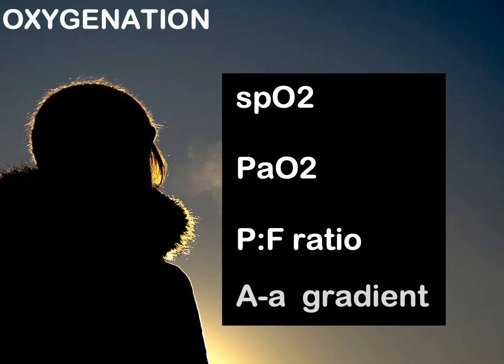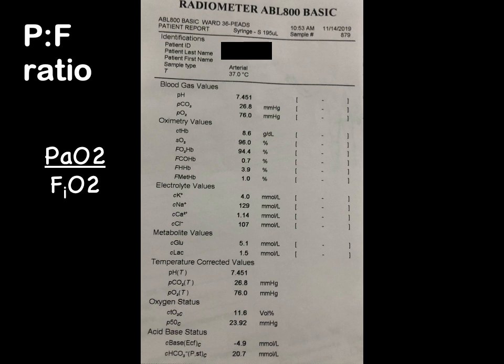We're going to chat about PF ratio, and I'm not going to focus a lot on AA gradient. PF ratio is a simple thing that we can do at the bedside — I really like it, and I encourage all of you to focus on this element of quantifying the hypoxia for the patient. So the PF ratio is the PaO2 over the FiO2 — the relation of the arterial concentration of oxygen in relation to the amount of oxygen we are providing to the patient, the fraction of inspired oxygen. The FiO2 is expressed as a decimal, so if the oxygen concentration is 40%, the FiO2 is 0.4.